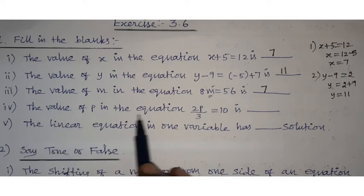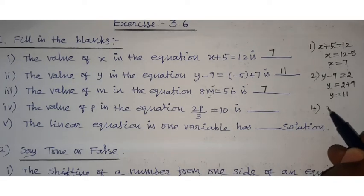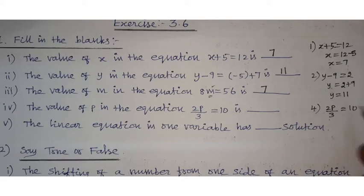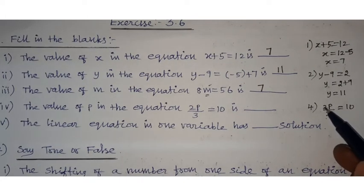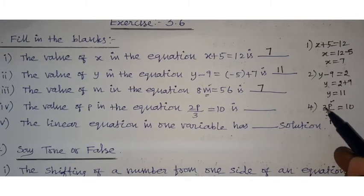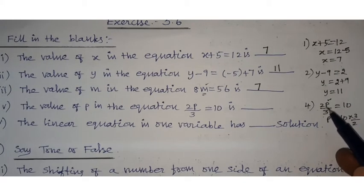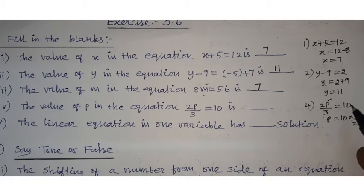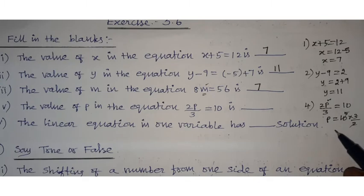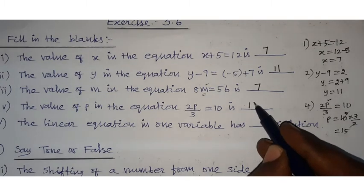Fourth question: the value of p in the equation 2p by 3 equals 10. Here 2 by 3 is the coefficient of p in multiplication. To get p alone, bring 2 by 3 to the other side as its reciprocal 3 by 2. So p equals 10 into 3 by 2, which gives 5 into 3 equals 15.